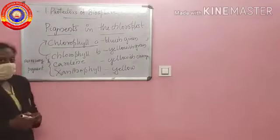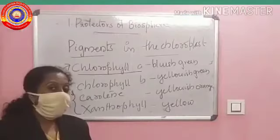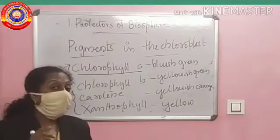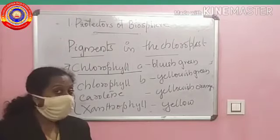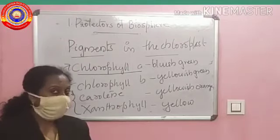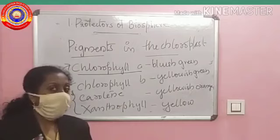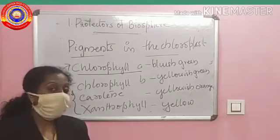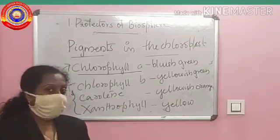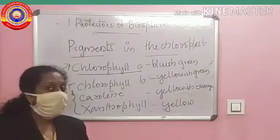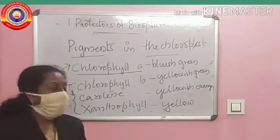Once again, pigments are seen in the grana of the chloroplast. What is grana? It is membranous sacs which are arranged one above the another — it is called the grana.